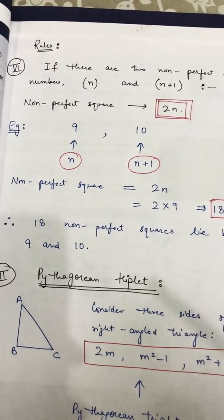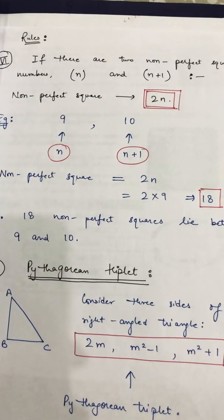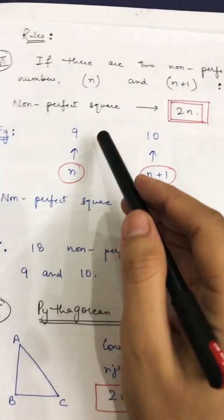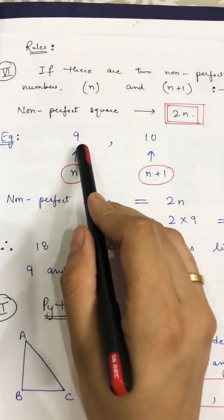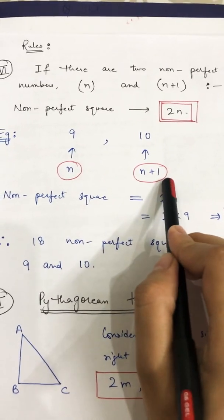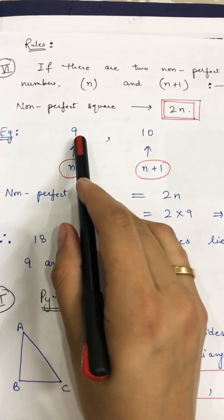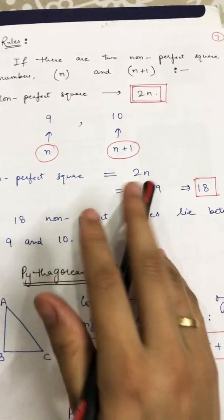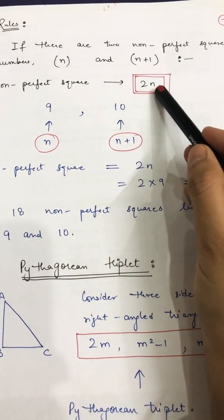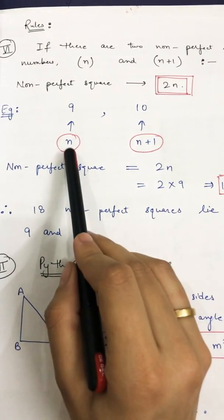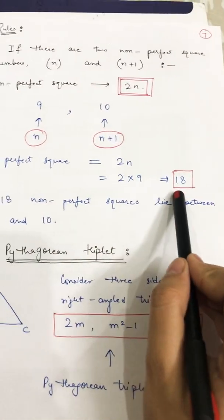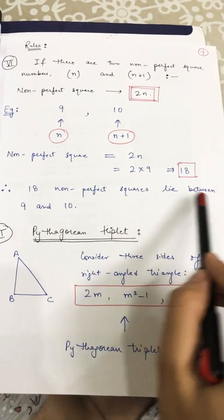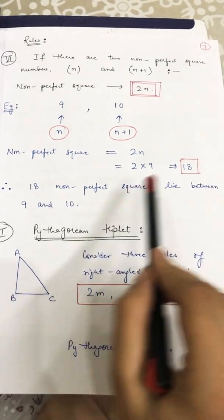For example, take n = 9 and n+1 = 10. Using the formula 2n: 2 × 9 = 18. So 18 non-perfect squares lie between 9 and 10.